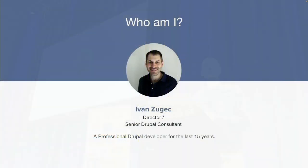A bit about myself: my name is Ivan Zhugets. I've been a professional Drupal developer for about 15 years, and I looked at my Drupal.org profile which shows I've been a member for 17 years and five months, which is absolutely crazy.